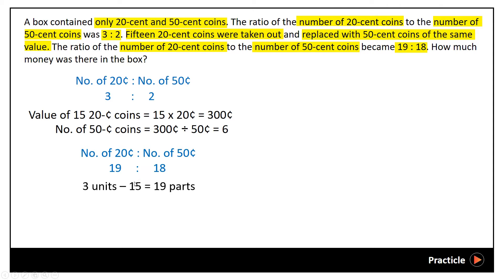And this leaves us with 19 parts of 20-cent coins in the end. And then the same thing. We have 2 units of 50-cent coins in the beginning. And because we exchanged them for another 6 50-cent coins, so after adding in the 6 extra 50-cent coins, we would end up with 18 parts of 50-cent coins. So far so good?